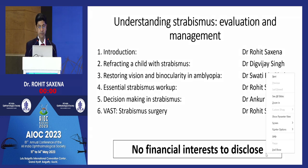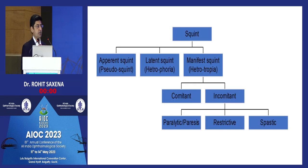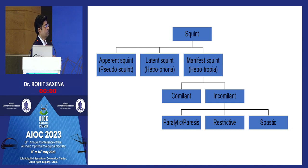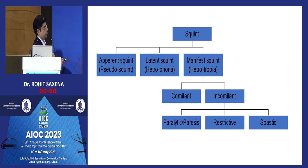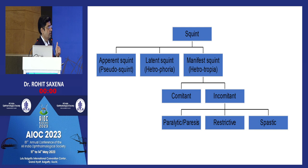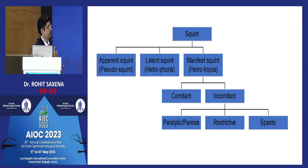Everything we are going to discuss can be put into this flowchart. You have a strabismus — it could be a pseudo-strabismus, a latent strabismus, or a manifest strabismus. Pseudo-strabismus is not actually present but appears to be. Latent strabismus exists but is controlled by dynamic factors like fusion or accommodation. Manifest strabismus can be comitant or incomitant.